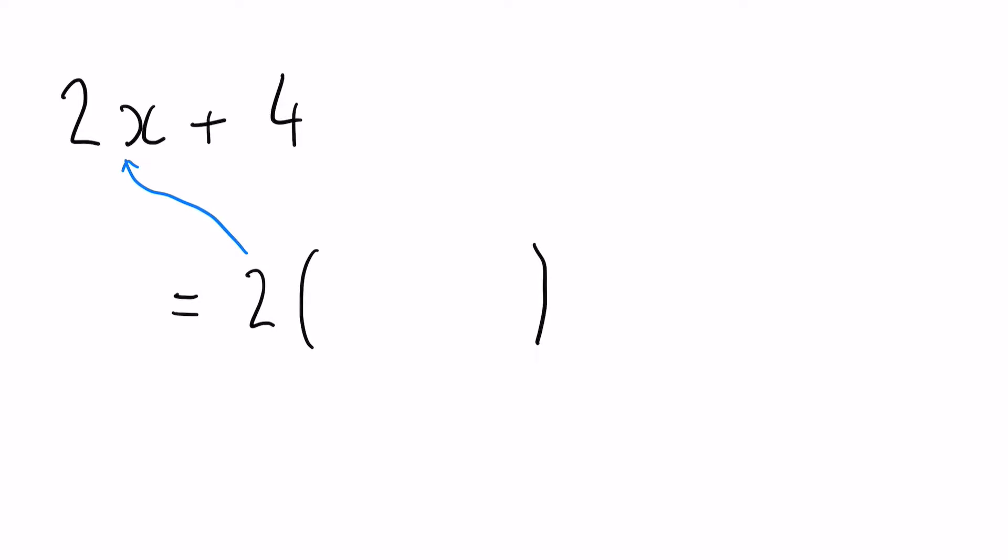2x divided by 2 is simply going to leave you with an x. And you do exactly the same for the second term, the 4. If I do 4 divided by 2, that is going to leave me with a positive 2. And that is it. That is your final answer.